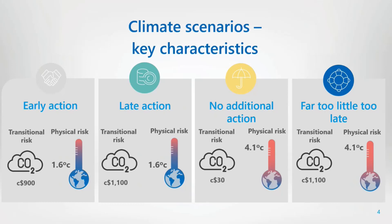Each scenario has its own unique characteristics and different exposures to both transition and physical risks. Furthermore, they have different assumptions and have a large number of climate metrics underlying them. For each scenario, we've highlighted two of what we see as the key metrics: the carbon price and global temperatures. We believe these would be the key drivers of transition risk and physical risk respectively.